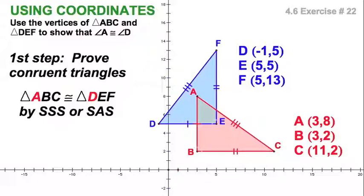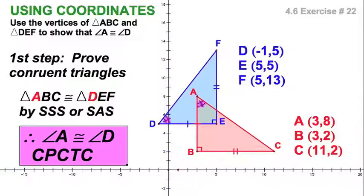Or if you were really on the ball, you said, haha, right angles. So I don't have to check these two sides. I've got side, angle, side. And either way, you've got congruent triangles, congruent. Once the triangles are congruent, then I know their corresponding parts are congruent.